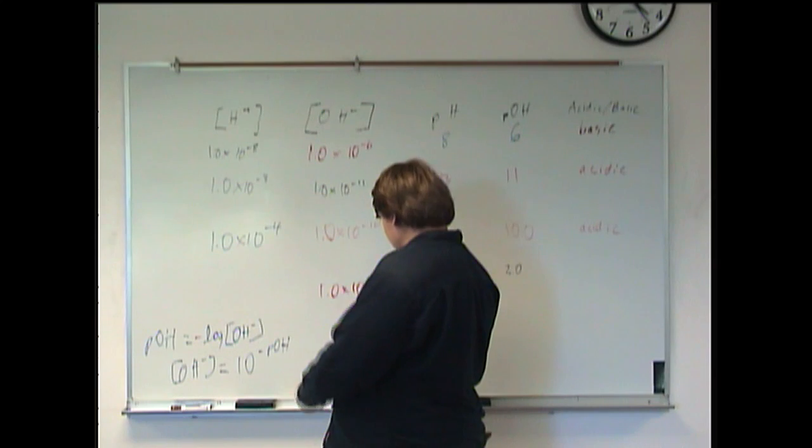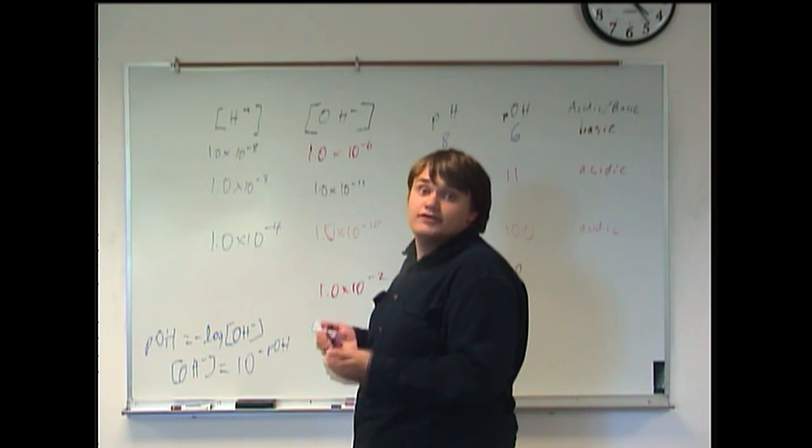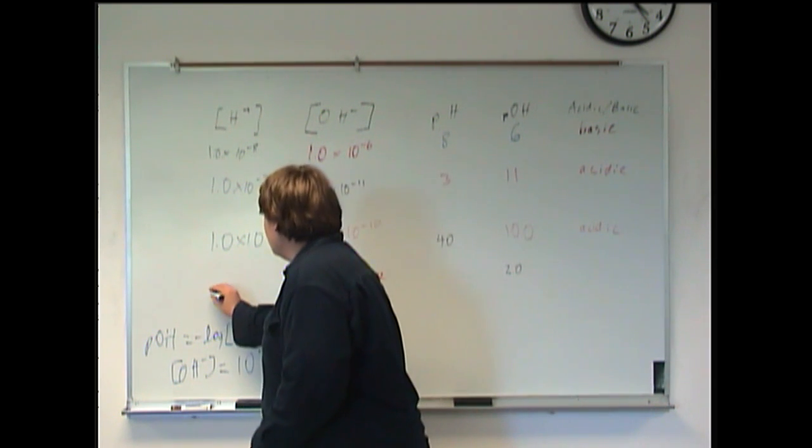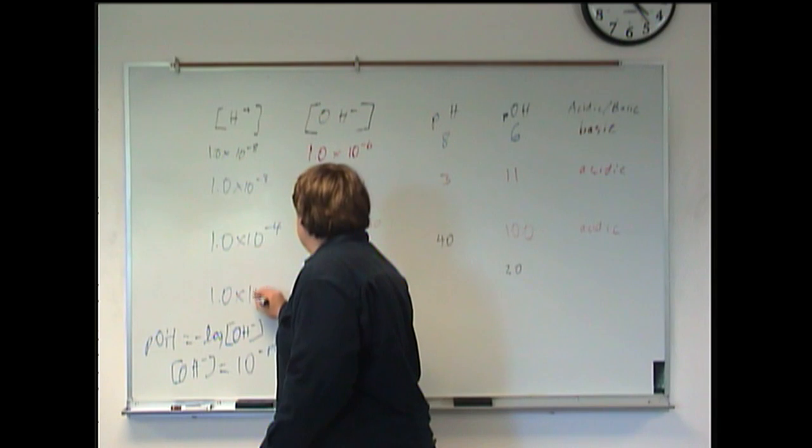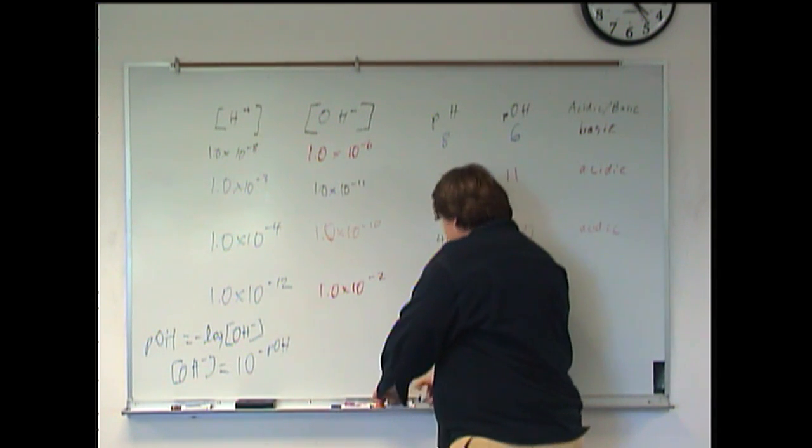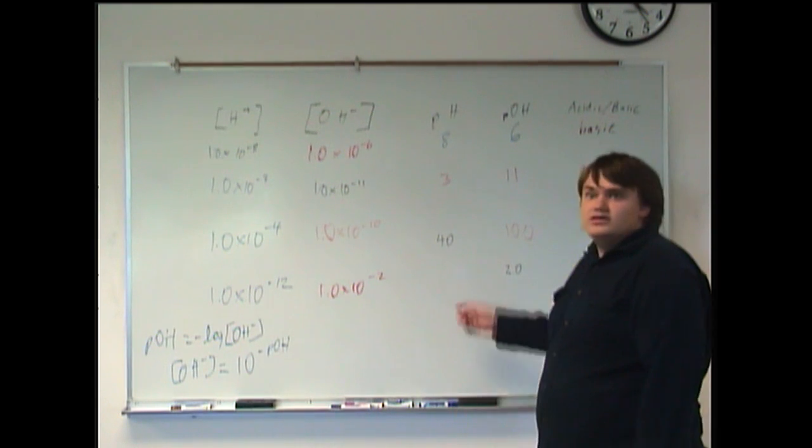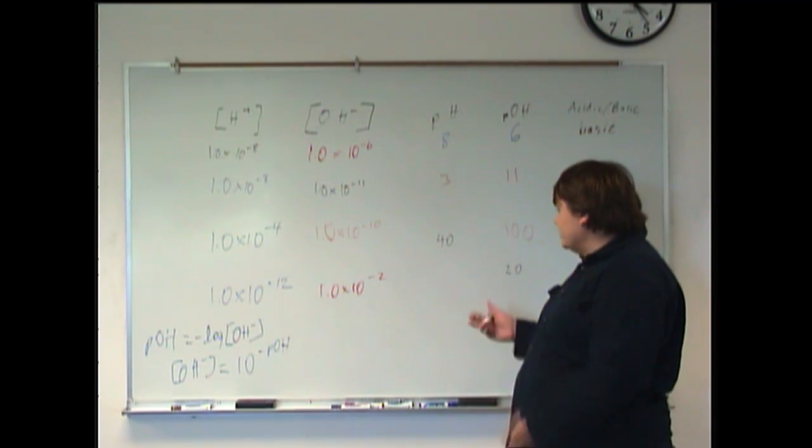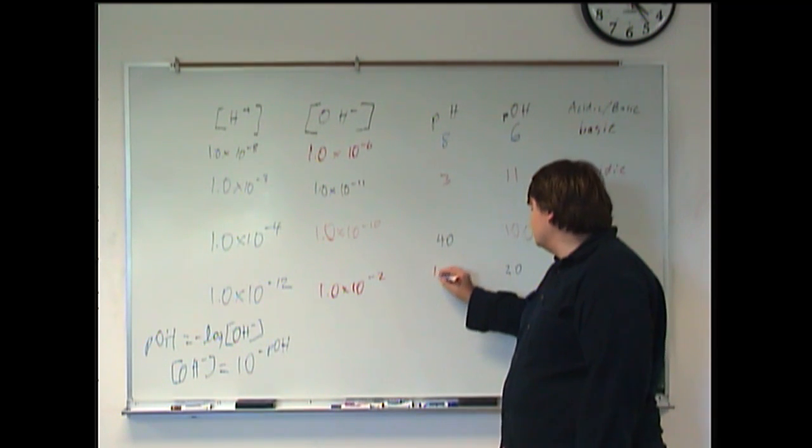And then, using the equation relating the two concentrations, we get 1 times 10 to the negative 12. And then, of course, pH plus pOH, using that, we get a pH of 12.